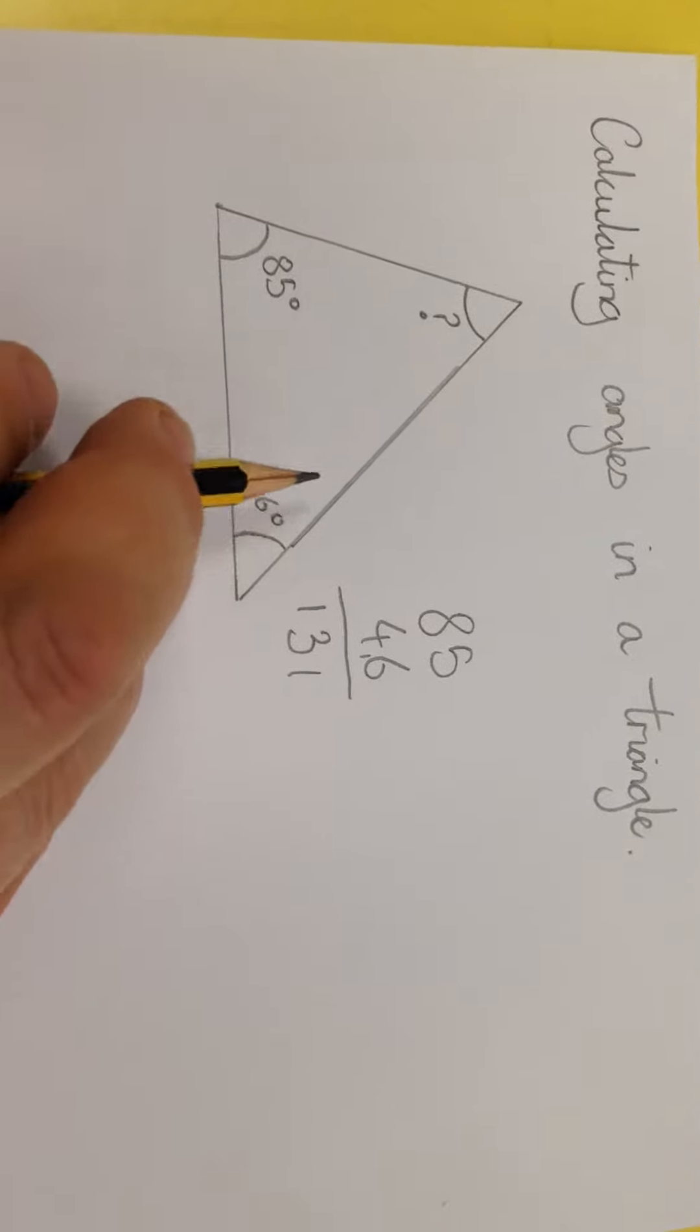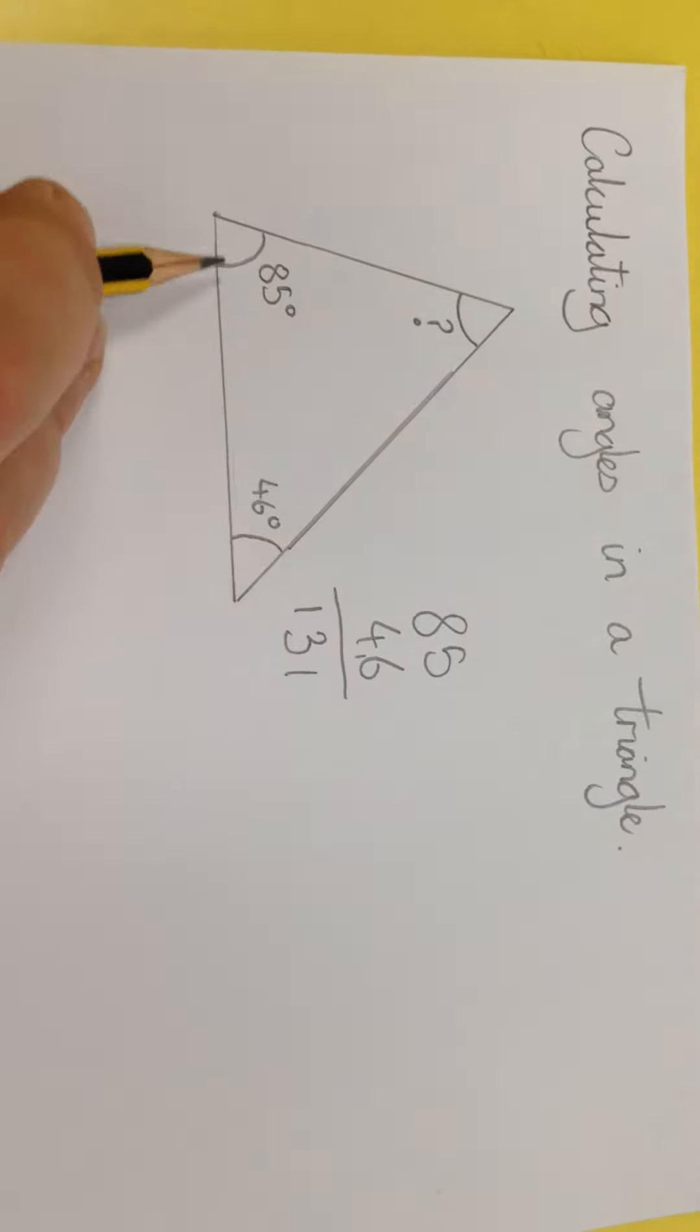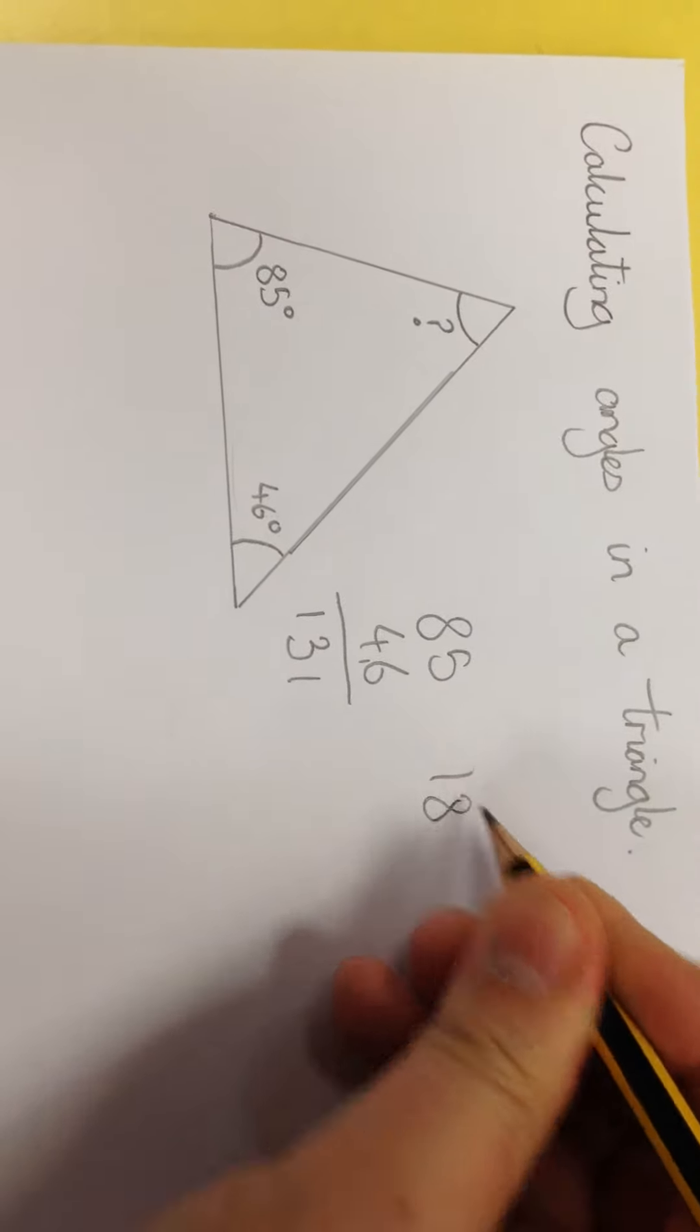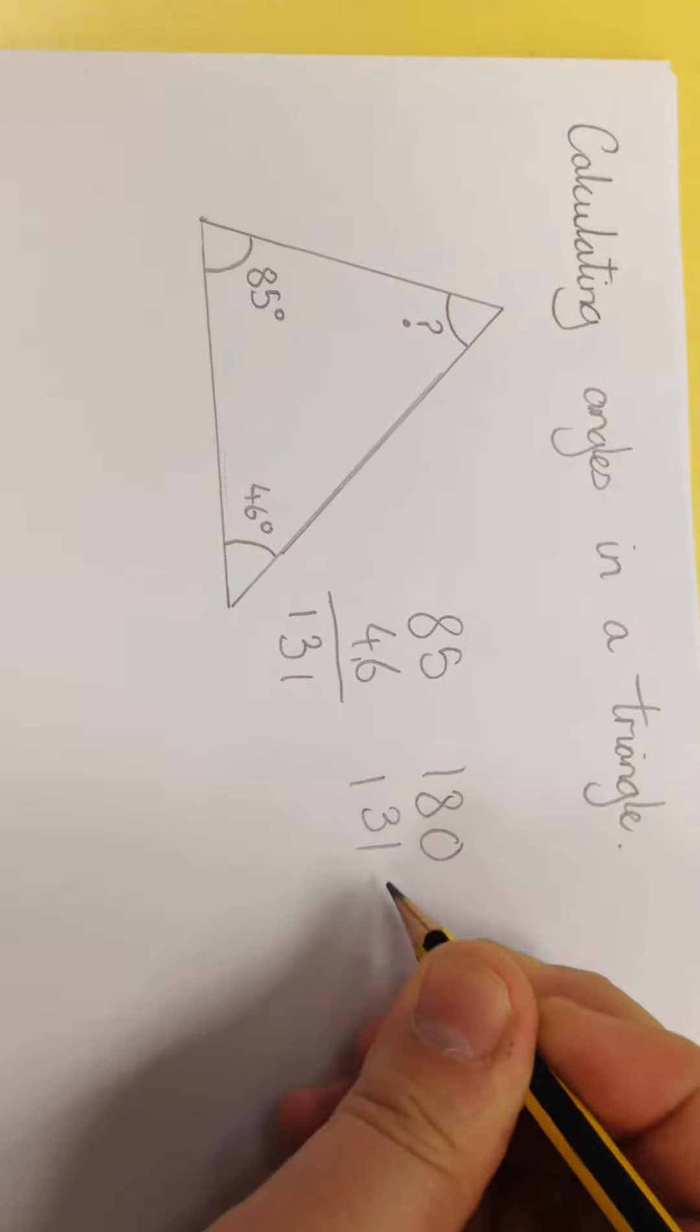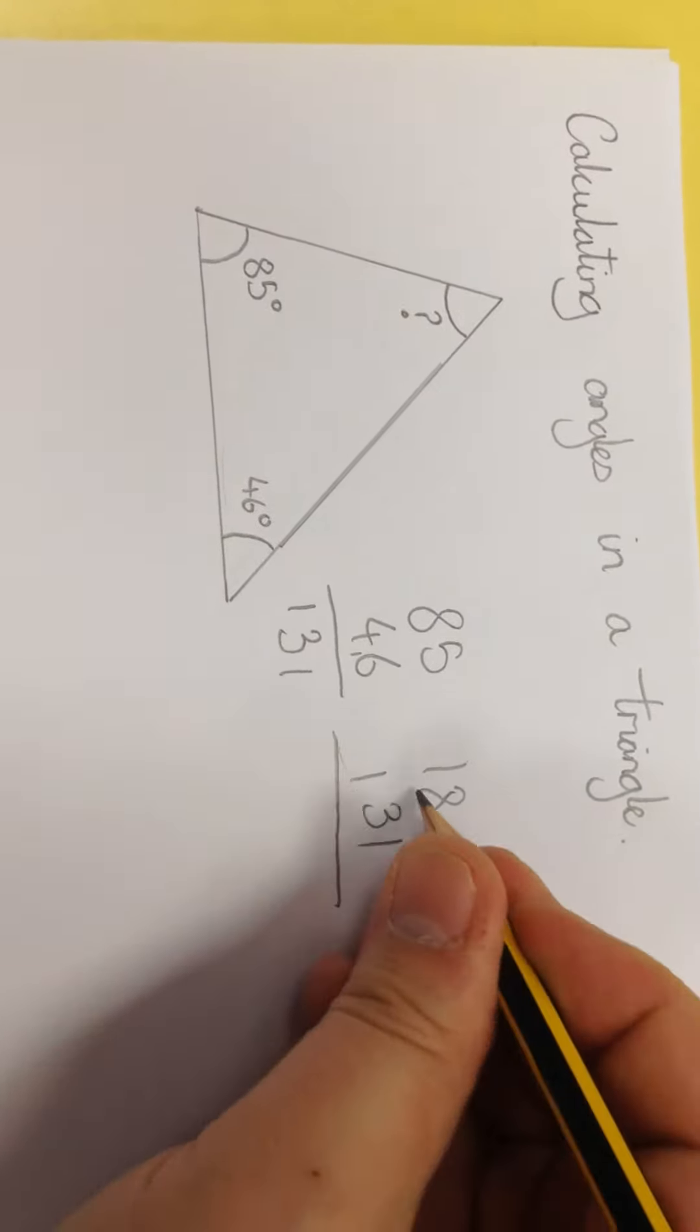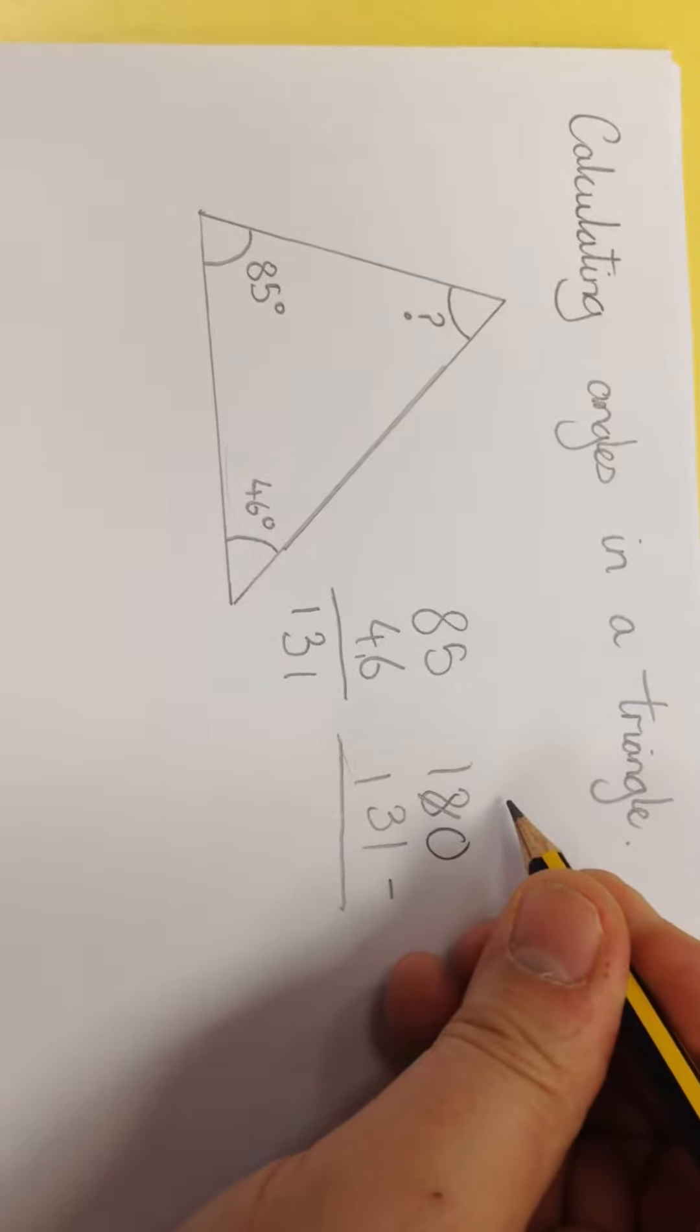Now I've got to find the difference between 180, the whole triangle, and my 131. So I'm going to do a subtraction: 180 subtract 131. Zero, I'm going to borrow from the tens column.